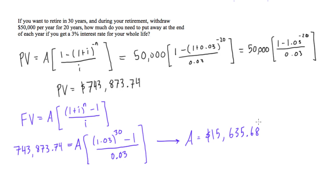This number, $15,635.68, is how much you're going to need to put away at the end of each year for 30 years with the given interest rates so that once you retire, you can withdraw $50,000 every year for 20 years of retirement.